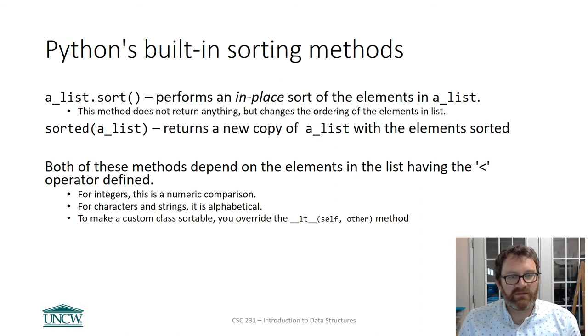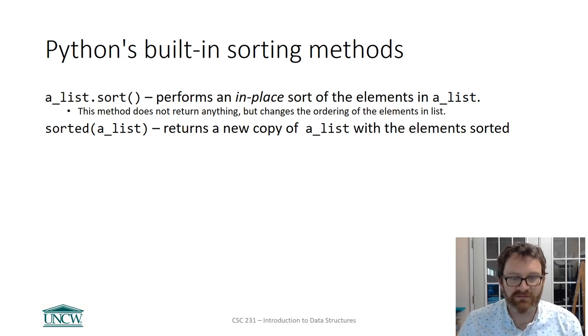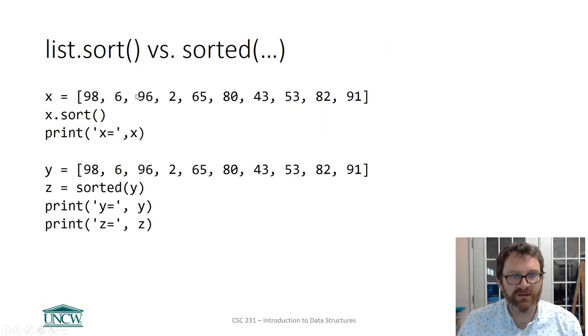These two sorting methods both depend on the elements and objects you are sorting have the less than operator defined. So the way the comparisons work, and we don't see the exact algorithms under the hood, is they're kind of looking at each item in the list, and in some way saying, hey, is this item less than this item? Is it less than this item? So the comparisons are all based on less than.